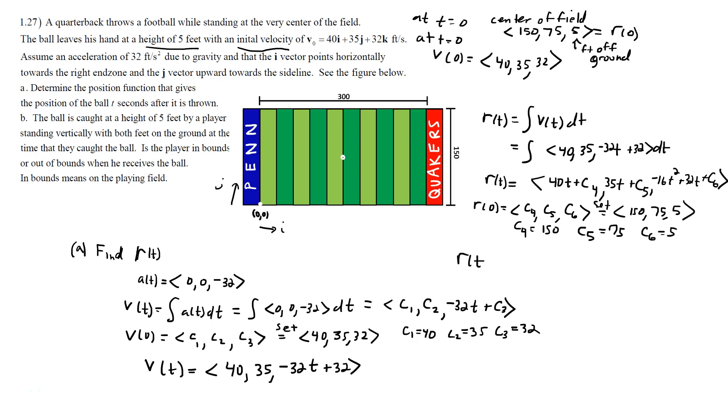Giving us our position function: 40T plus 150, 35T plus 75, and then negative 16T squared plus 32T plus 5. And that would be to answer part A.